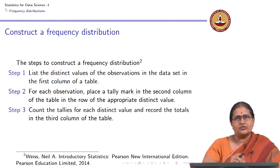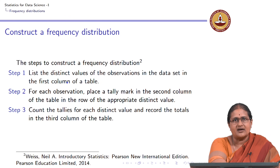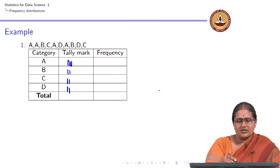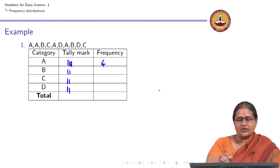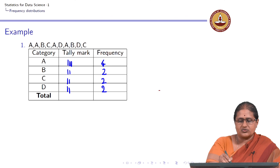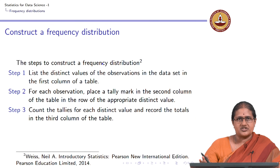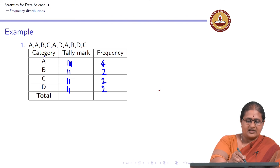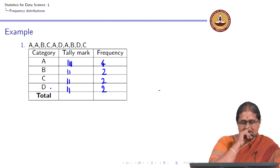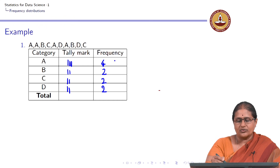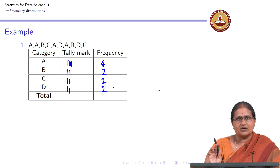Step 2: for each observation, place a tally mark and then count the number of tallies. Counting the tallies, the frequency or count of A is 4, count of B is 2, count of C is 2, and count of D is 2. This is what we refer to as a frequency distribution, with distinct values in column 1, tally marks in column 2, and the count in column 3.